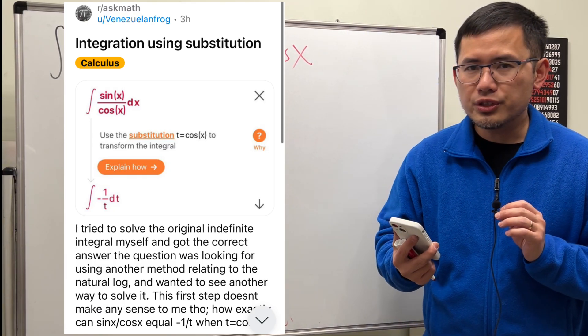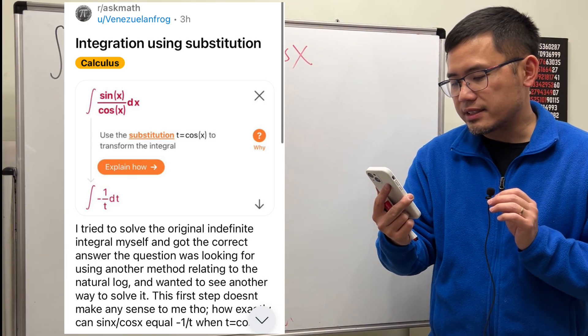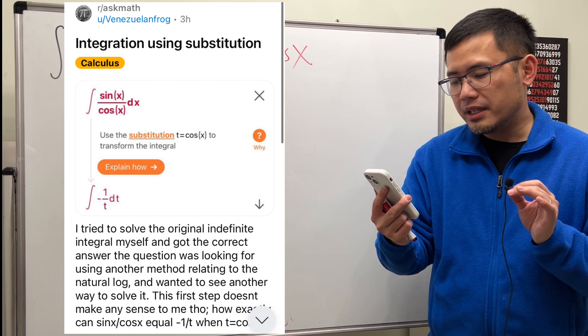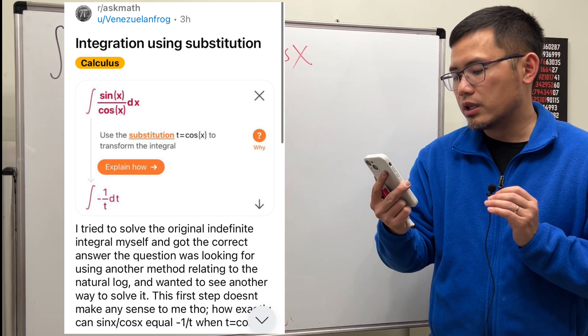Integration using substitution. We have the integral of sin x over cosine x, and then we are making the substitution, letting t equal to cosine x.